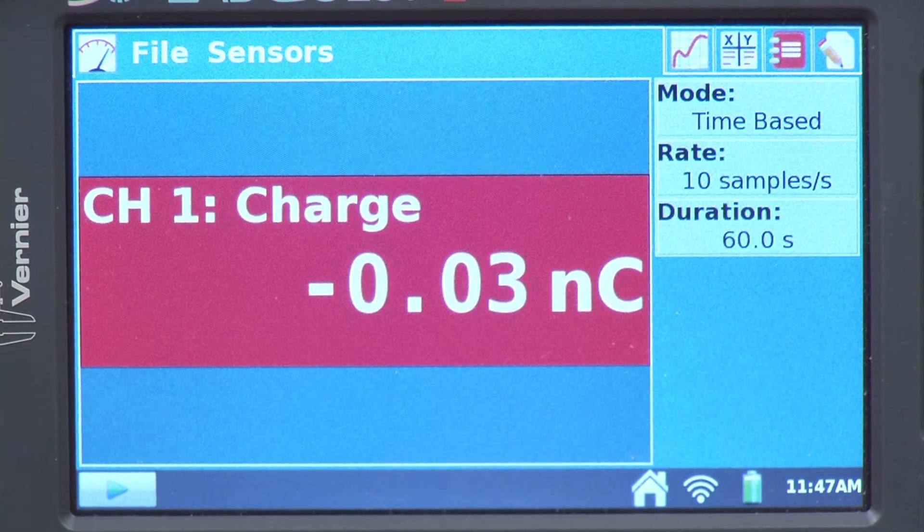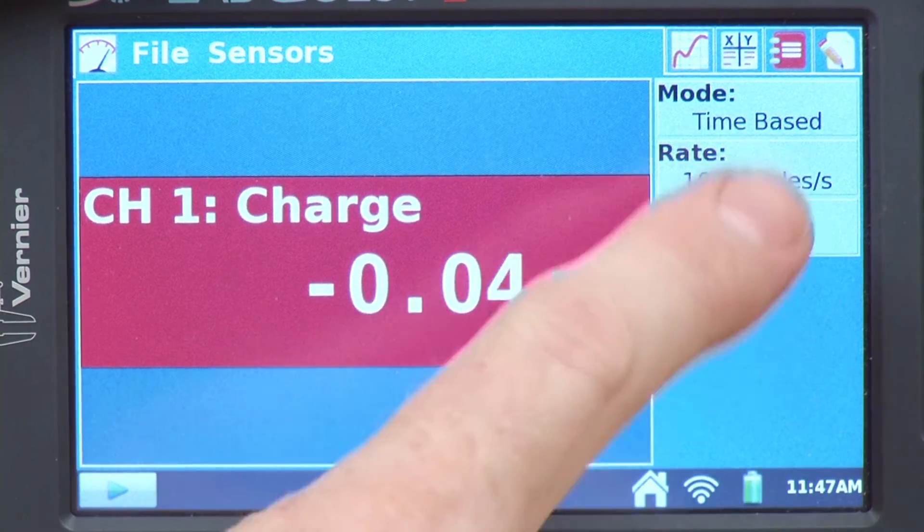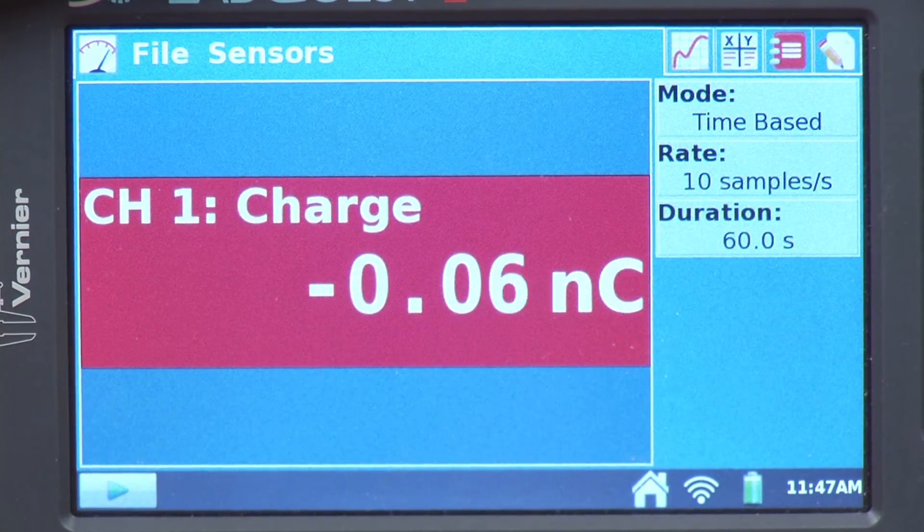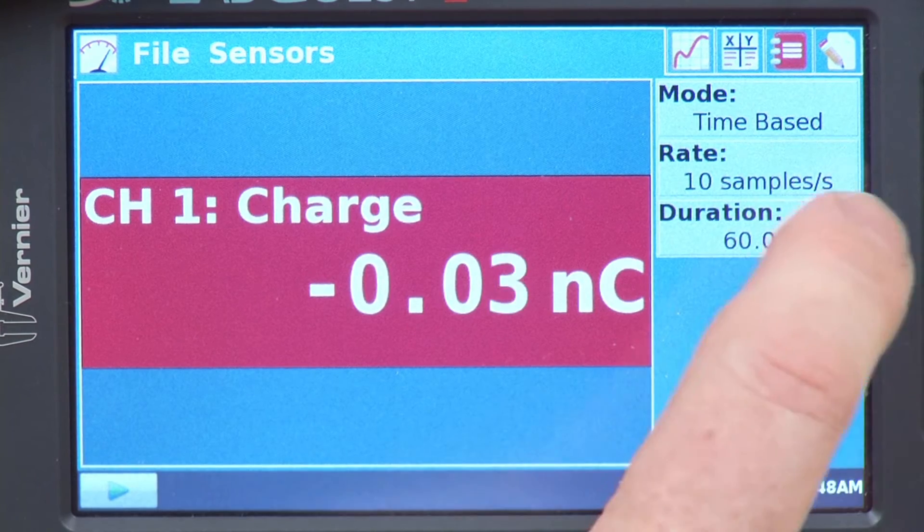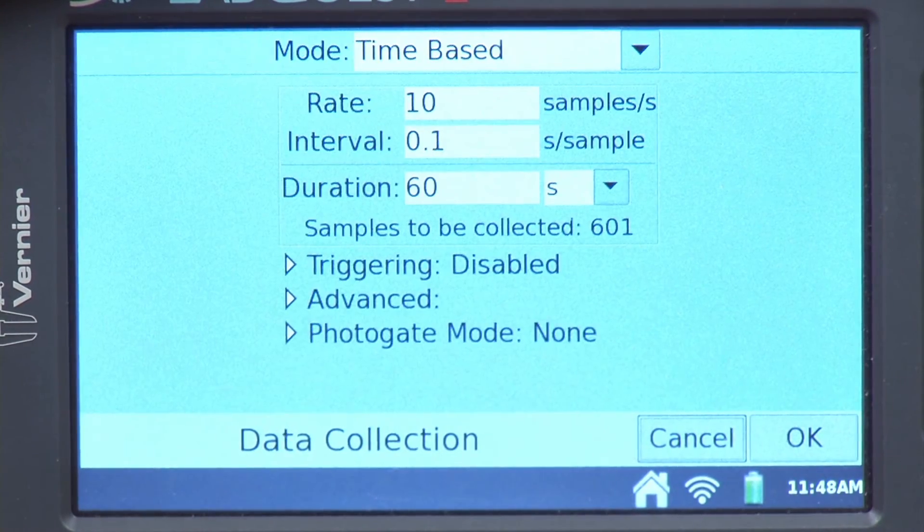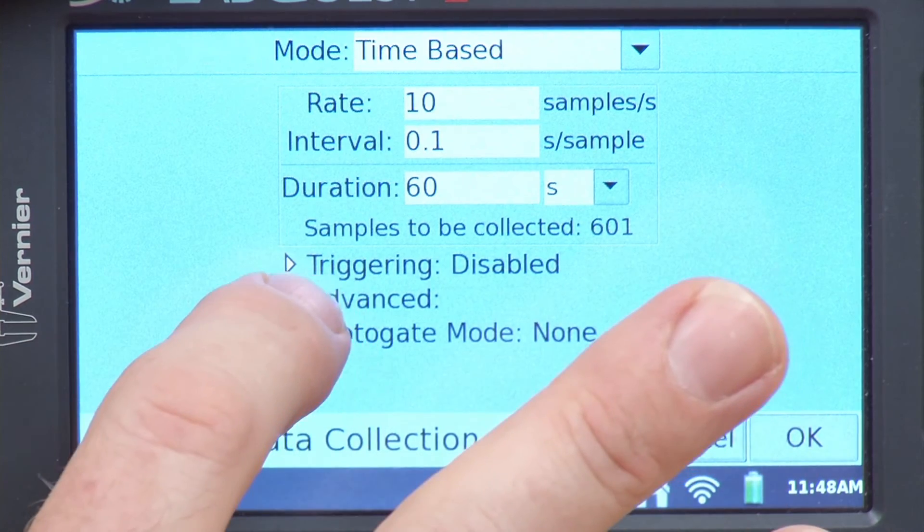Now we need to set up for this experiment. I'm going to use the standard default settings for the charge sensor, 10 samples per second, 60 seconds. But I want to enable data marking, which is going to allow me to mark different points on the graph.